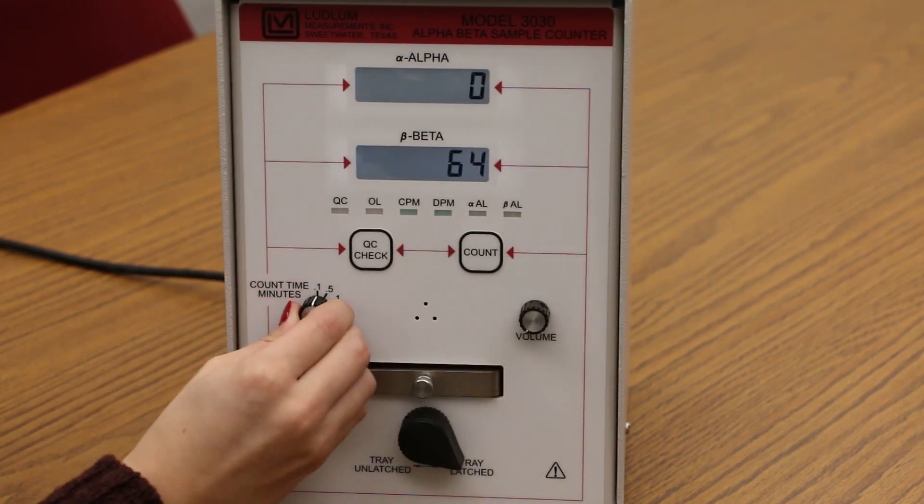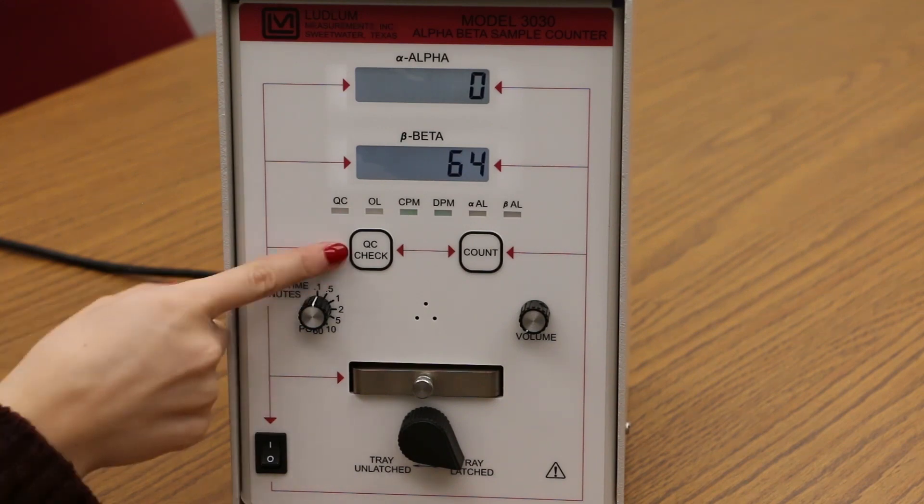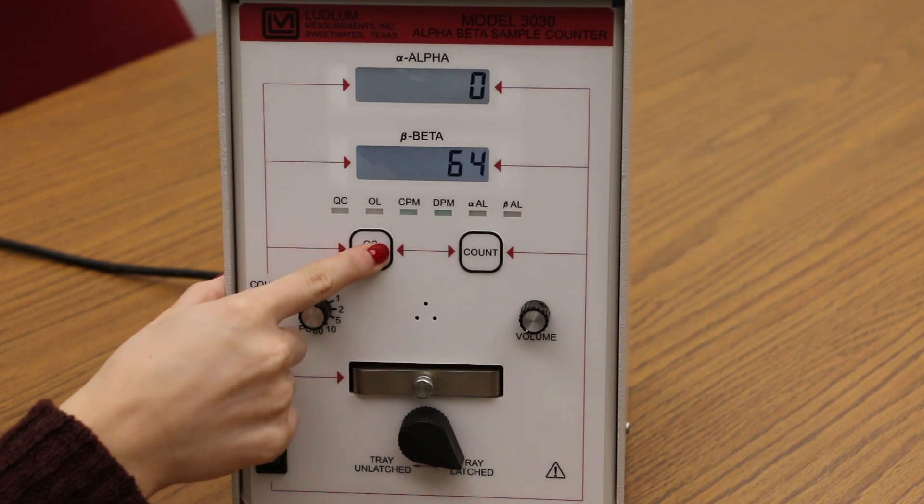Adjust the count time switch to your desired count time. The factory default operating mode is scalar count. In this mode the QC button is disabled.